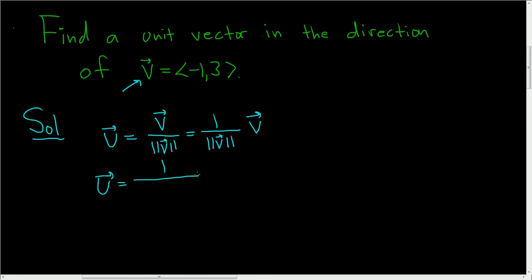So it's 1 over. Now to figure out the magnitude, you just take the square root, and you square these guys, and you add them up. So negative 1 squared plus 3 squared. And then here we have our vector v. So negative 1 comma 3.